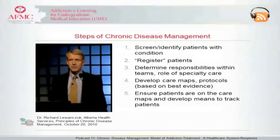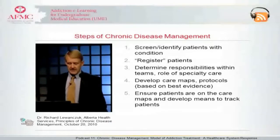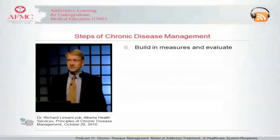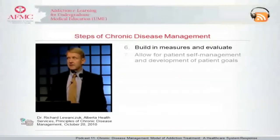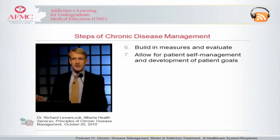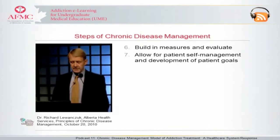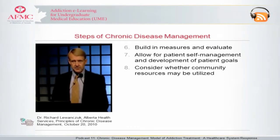We track people and remind ourselves. We build in alerts: it's now six months after diagnosis — we need to do these certain things, check for this, check for that, measure this. We then build in measures to tell us how are people doing, are we achieving the things we hoped to achieve. In a chronic disease management system, we allow and build in patient self-management. We help people identify goals: what are your goals for the coming year, what can you work towards, what should you as the person with the disease be doing, how can we help you, what are the community resources available?